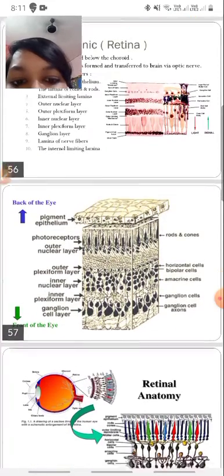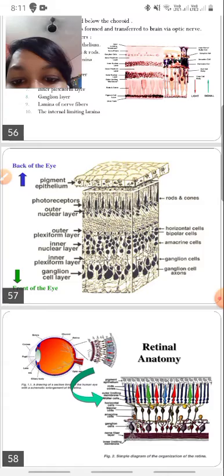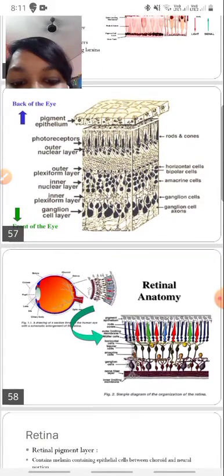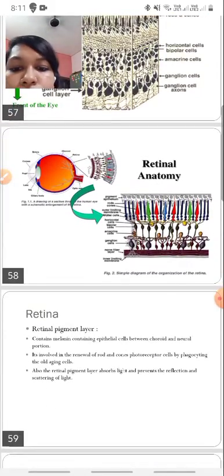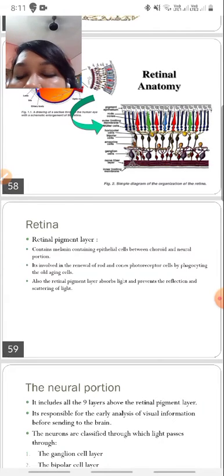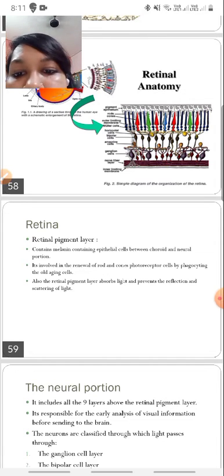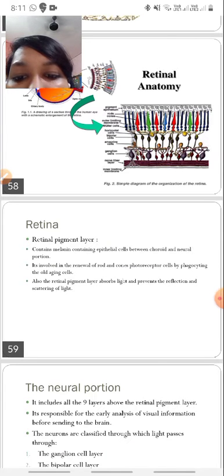This picture is more clear. The labeling is more clear in this picture. So first a few words about the retinal pigment epithelial layer. They contain the word pigment, which means that they contain melanin containing epithelial cells between choroid and neural portion. It is involved in the renewal of rods and cones, photoreceptor cells by phagocytosing the old aging cells. Also the retinal pigment epithelial layer absorbs light and prevents the reflection and scattering of light.